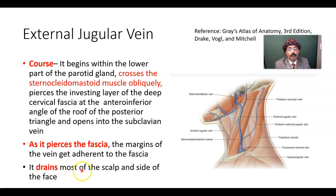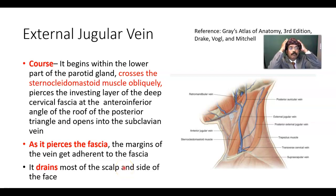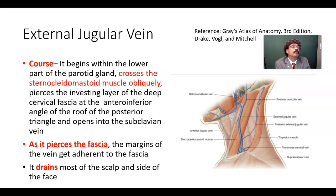It drains most of the scalp and the side of the face — the external jugular vein picks up venous blood from the skull and face. The internal jugular vein, by contrast, mostly picks up venous blood from the brain and the deep structures of the head and neck.